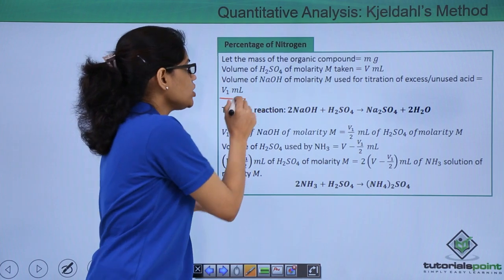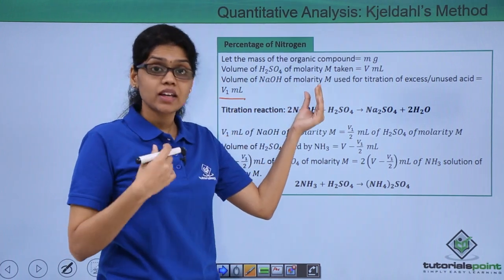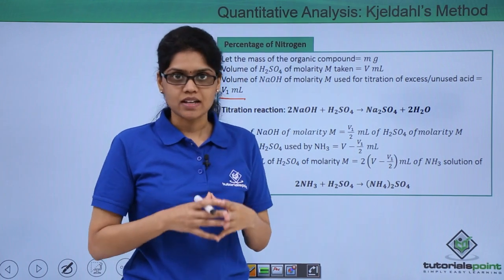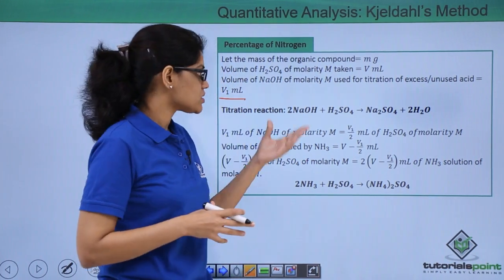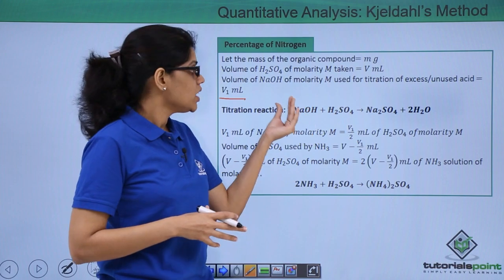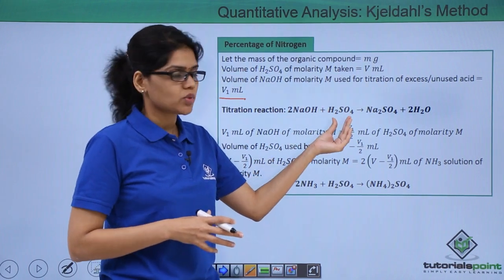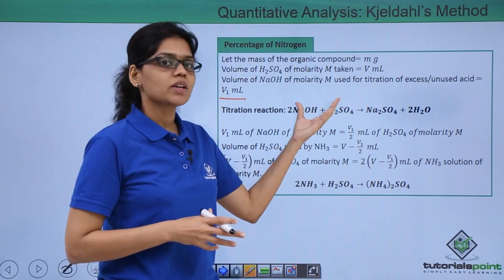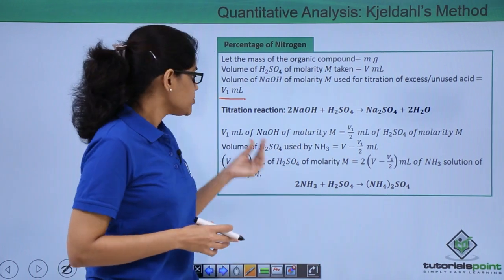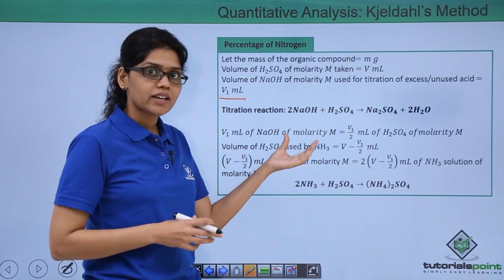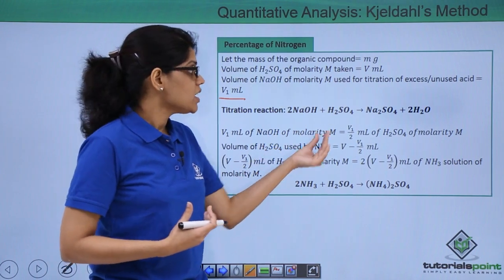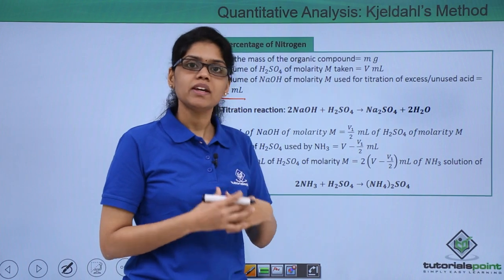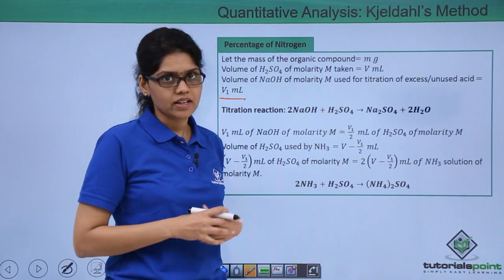Let V1 be the volume of NaOH of molarity M that is used for the titration of excess or unused acid. The titration reaction would be 2NaOH + H2SO4 → Na2SO4 + 2H2O. From this reaction you can easily see that if V1 ml of NaOH of molarity M is used then V1/2 ml of sulfuric acid of molarity M will be consumed in the titration reaction.